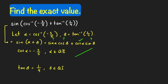Let us draw a right triangle. Since cosine(alpha) = negative 3 over 5, the cosine of the reference angle alpha-bar equals 3 over 5. Using cosine = adjacent over hypotenuse, the adjacent side is 3 and the hypotenuse is 5. By the Pythagorean formula, the opposite side is √(25 − 9) = √16 = 4.